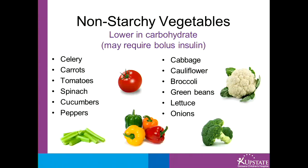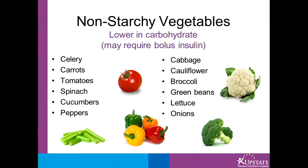Non-starchy vegetables are lower in carbohydrates. Examples of these include celery, carrots, tomatoes, spinach, cucumbers, peppers, cabbage, cauliflower, broccoli, green beans, lettuce, and onions. They may require a bolus dose depending on the amount consumed.